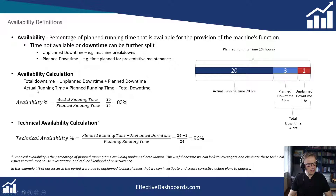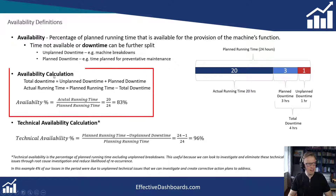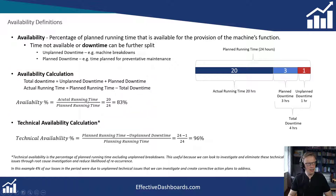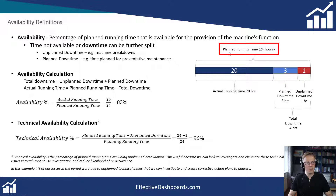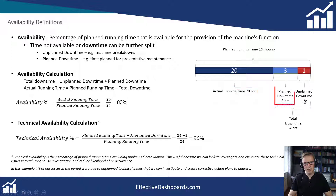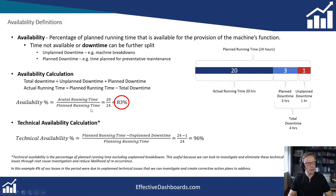We're going to look at two different calculations. The first is the availability calculation: actual running time divided by the planned running time. In this example the planned running time is 24 hours — a 24-hour shift pattern. The machine actually ran for 20 hours; there was planned downtime of 3 hours and unplanned downtime of 1 hour. So the total downtime was 4 hours, and 20 divided by 24 is 83% availability.